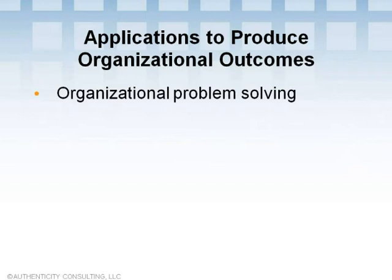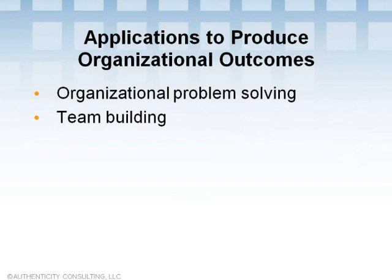Organizational problem solving is the classic role of Action Learning — the application for which it was originally founded. Organizations face increasingly complex problems that can't be solved by applying straightforward models or procedures. People often perceive only the symptoms and need to clarify them to get to root causes, then take ongoing actions to solve them while learning. That's essentially a description of Action Learning. Team building is another outcome: members frequently remark at how quickly their group became cohesive and trusting, because deep listening and helping each other builds strong bonds rapidly.